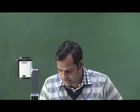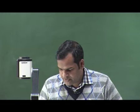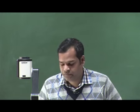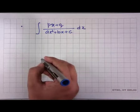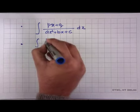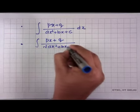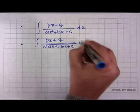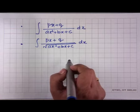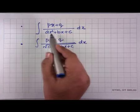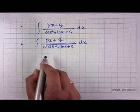We shall look at these two forms. Suppose we evaluate ∫(px+q)/(ax²+bx+c)dx or ∫(px+q)/√(ax²+bx+c)dx. The procedure for both is similar; only the formulas used differ slightly because one has a square root, so the square root formulas apply, while the other uses the perfect square formulas.